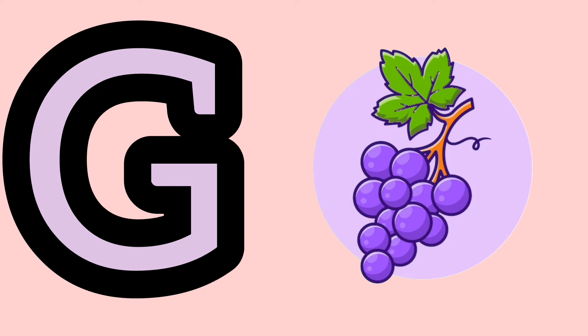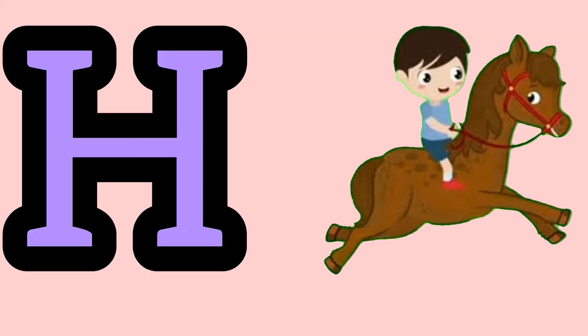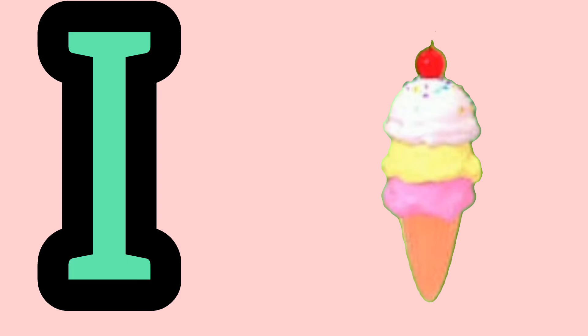G, G for grapes. H, H for horse. I, I for ice cream.